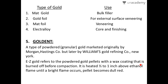Goldent is a powder form of gold referring to gold pellets with a wax coating that is burned off before compaction. It is heated half to one inch above the ethanol flame — not fully incorporated into the blue inner core — because the wax can produce a bright flame and may melt. The pellet becomes gel-red, indicating all non-cohesive properties are eliminated and the gold is ready for compaction.